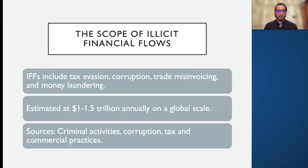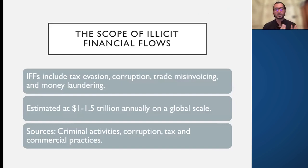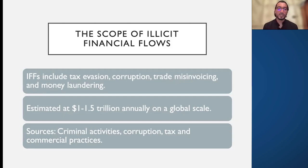IFF includes tax evasion and corruption. When there is corruption, people can take money from one country to another and invest it with lesser return, creating wealth in other countries. There are not many means to control or detect this. To understand these illicit flows happening between countries, researchers look at balance of payment data.